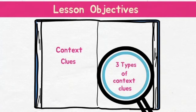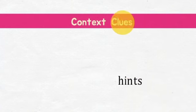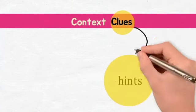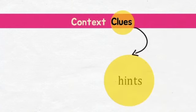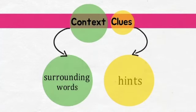We will learn about more types of context clues in class four. To help us understand the meaning of an unknown or difficult word, authors sometimes give us hints. These hints can be found in the context, or the language that surrounds a word. We will now look at three types of context clues.